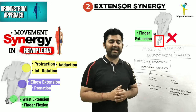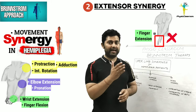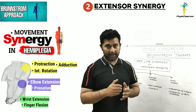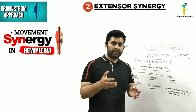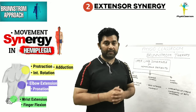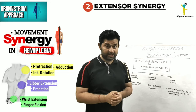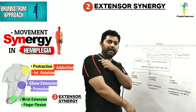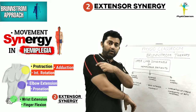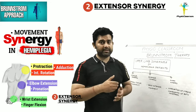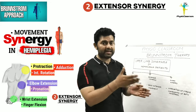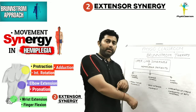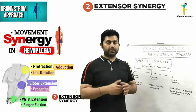Characteristically, finger extension is never seen in the extensor synergy of the upper limb. The strongest components of the upper limb extensor synergy are shoulder adduction and internal rotation, and the next strongest component is forearm pronation.